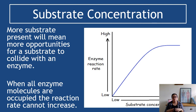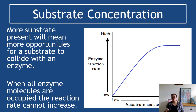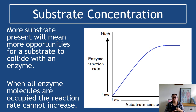At some point all the enzyme molecules will be occupied and they can't work any faster than they do at optimum conditions. Once all enzyme molecules are occupied, the reaction rate cannot increase. The pattern we see on enzyme-substrate concentration graphs is starting off low and then increasing up to a point and levelling off. That levelling off means all active sites are occupied and the reaction rate cannot increase further without changing temperature, pH, or adding more enzyme.